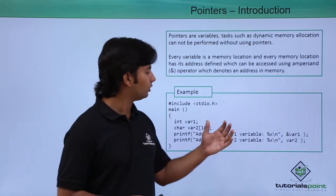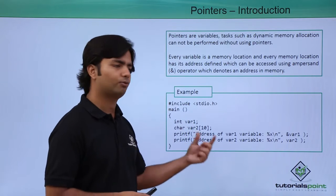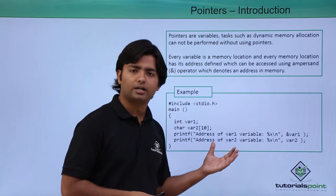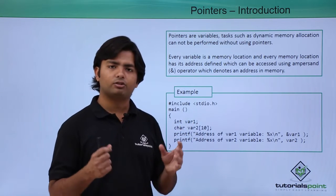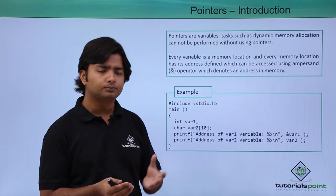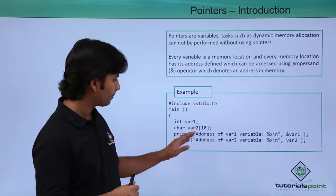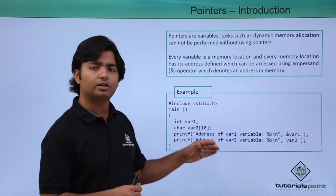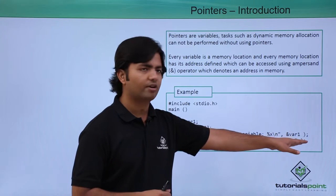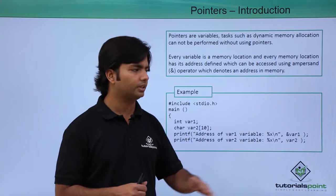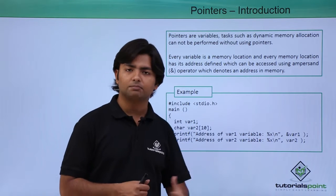Let's look at a program where there are a couple of variables — one is a normal integer variable and the other is an array. With arrays, there are a number of blocks each with an index starting at zero. If we want the address of var1, we use ampersand var1, which prints the address in hexadecimal format using the %x format specifier — the best representation for an address value.